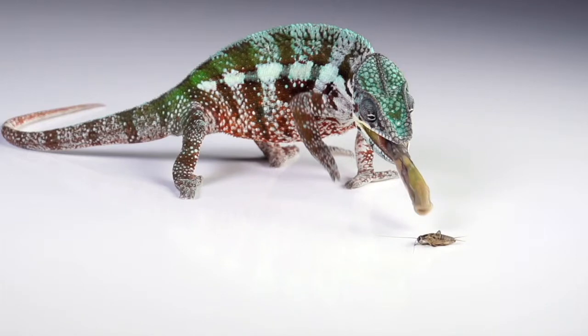But how does the tongue work? The chameleon shoots out its tongue like a rubber band. Just before the tongue reaches the insect, the chameleon pulls back the tip of its tongue.